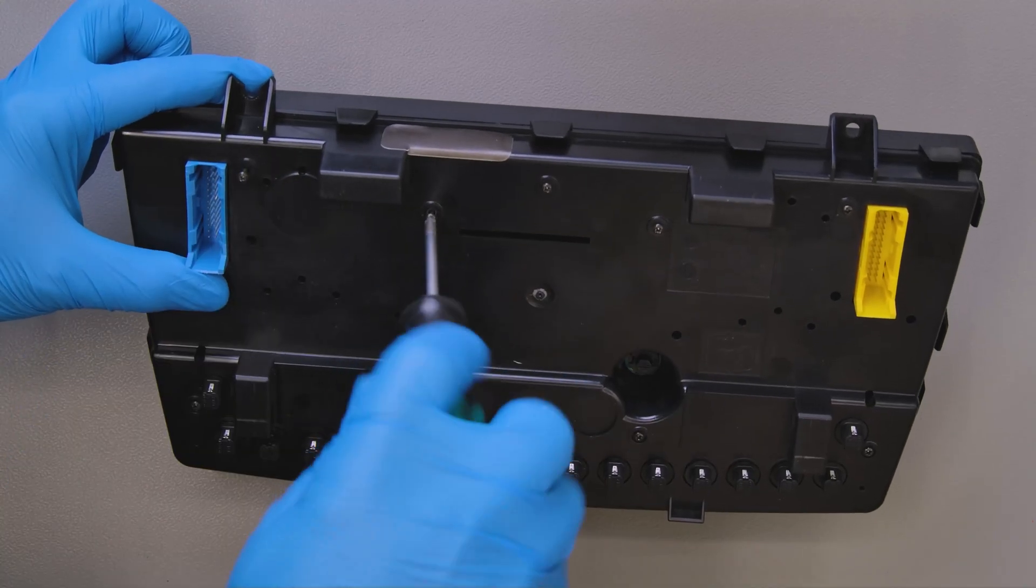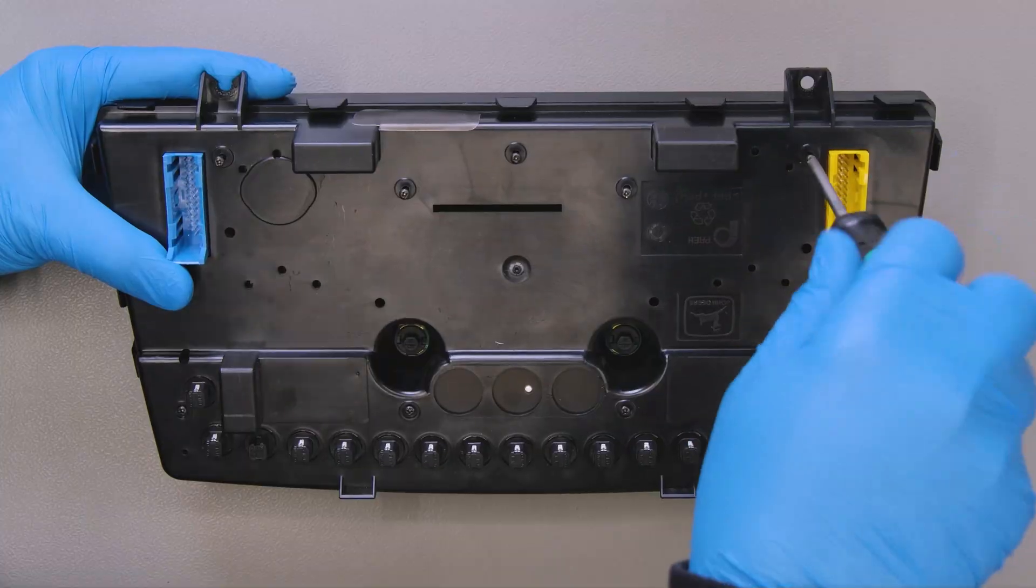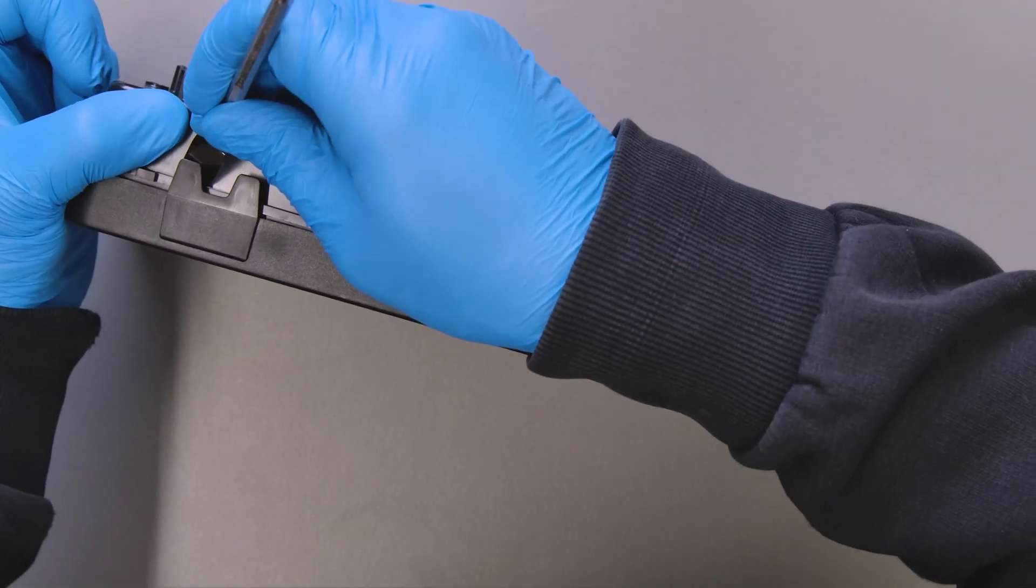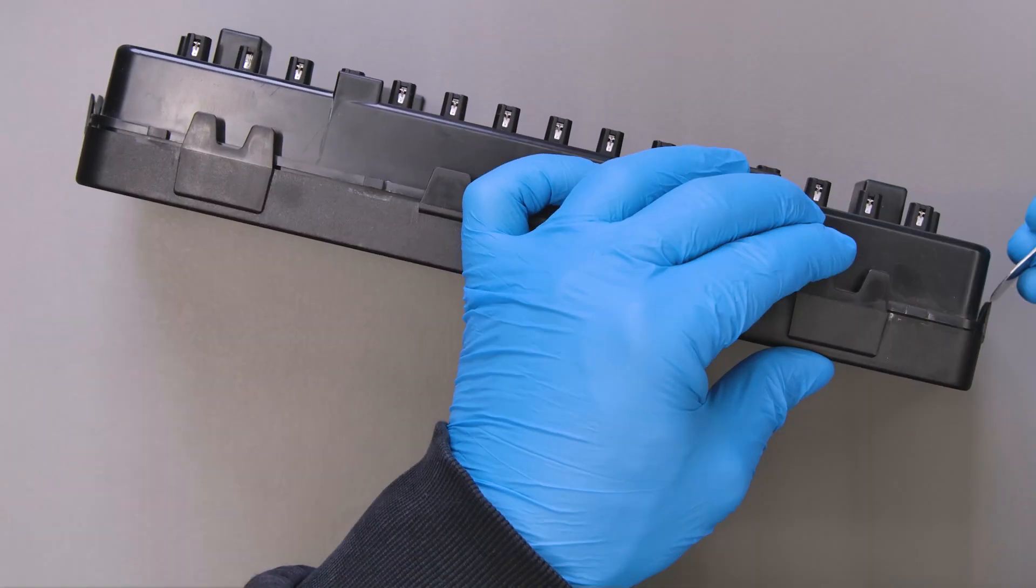Position the dashboard as shown and undo the rear screws. With the head of the spudger, open the cluster by levering on the plastic clips.